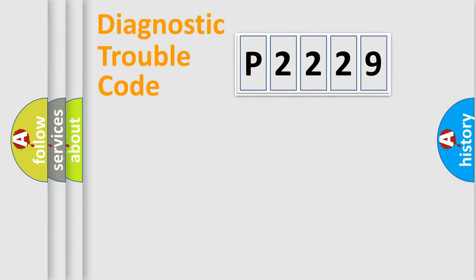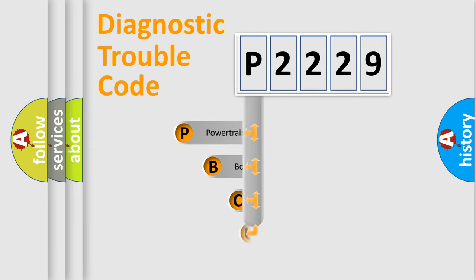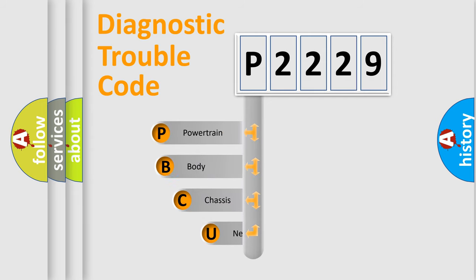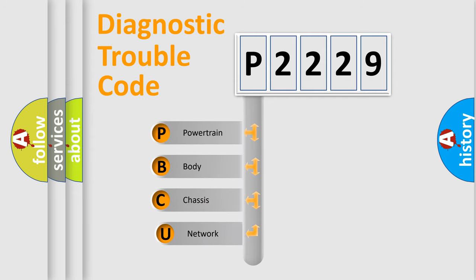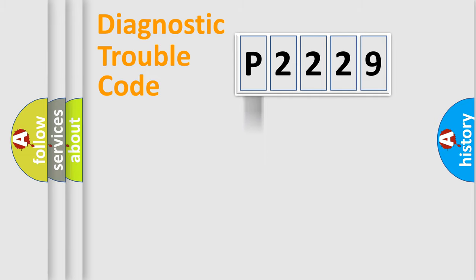Let's do this. First, let's look at the history of diagnostic fault code composition according to the OBD2 protocol, which is unified for all automakers since 2000. We divide the electric system of an automobile into four basic units: Powertrain, Body, Chassis, and Network.